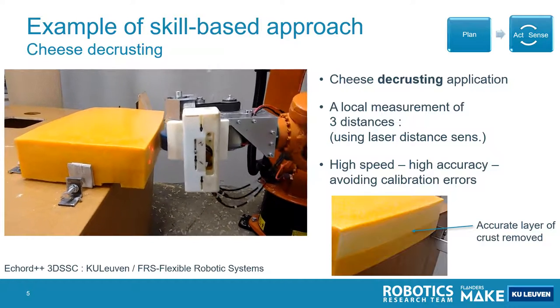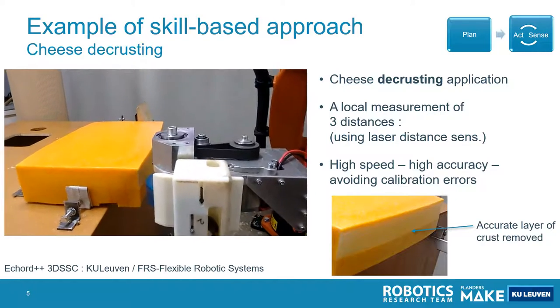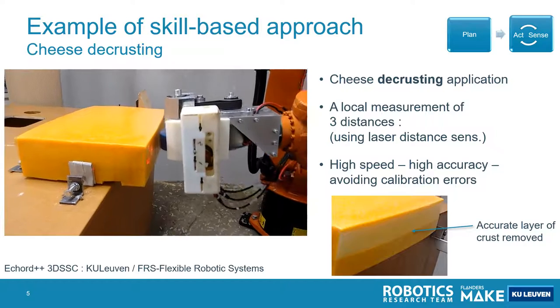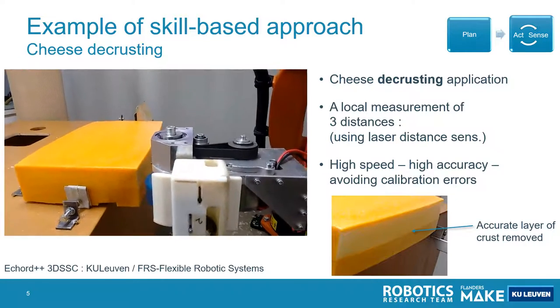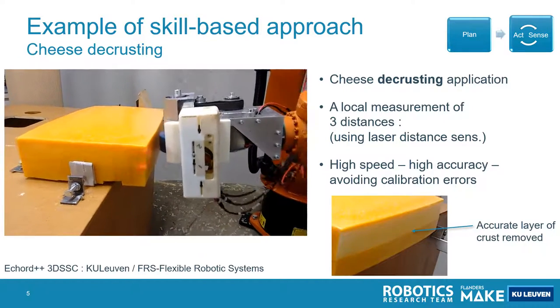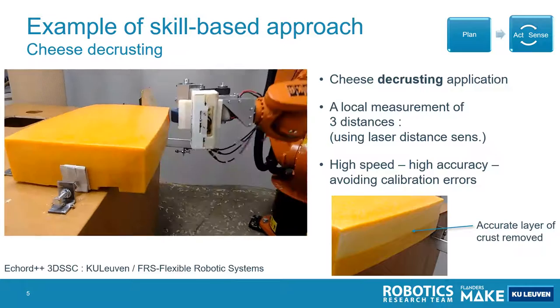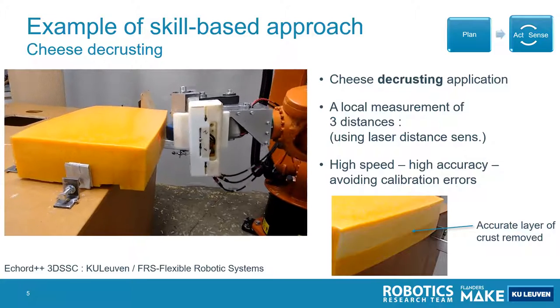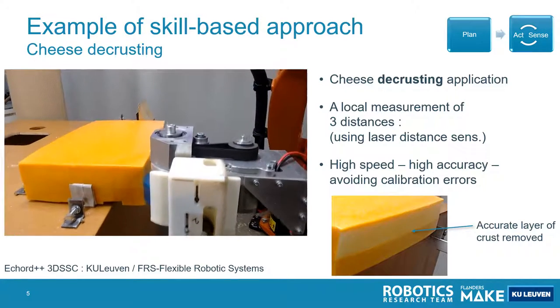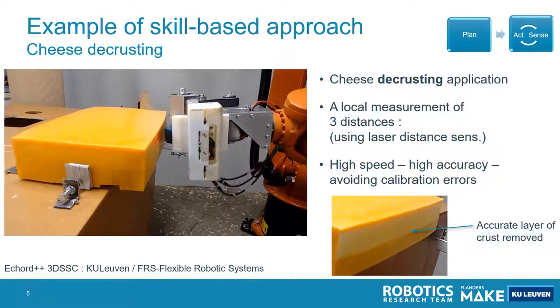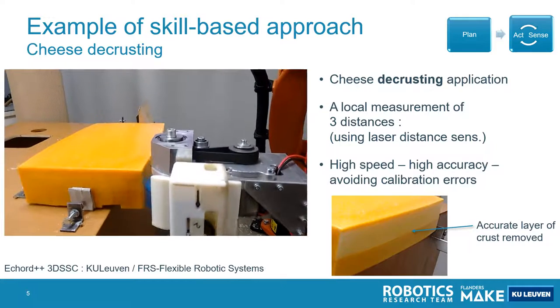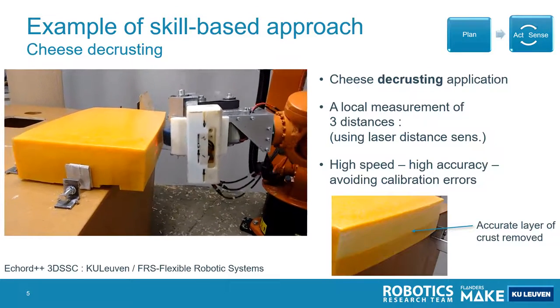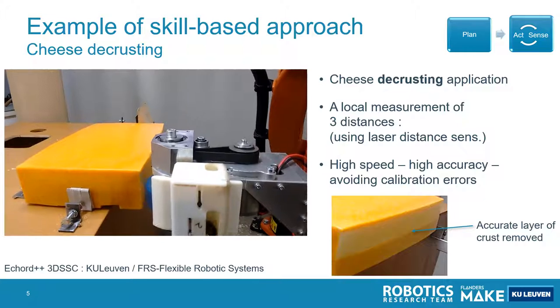Traditionally this is done by having a measurement cell where the cheese runs through and a 3D sensor is capturing the geometry of the cheese. Then it goes to a conveyor belt towards a robot cell where the cheese is decrusted based upon information of this measurement cell. You see already you have two separate cells connected with a conveyor belt.